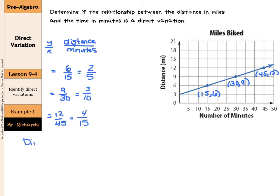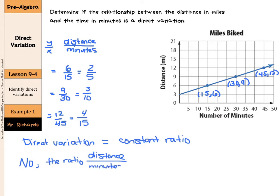Now these ratios are all different. A direct variation means that we have a constant ratio. And since we do not have a constant ratio, our answer here is no. The ratio distance over minutes is different for every pair of values.